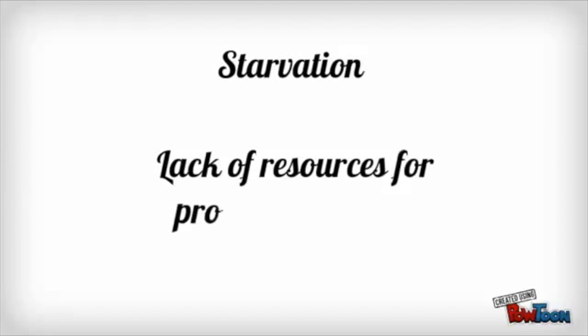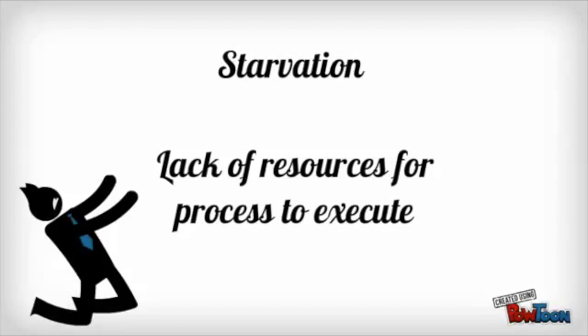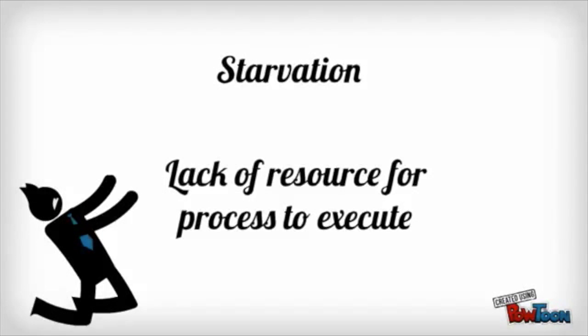Starvation. What is starvation? In computer science, starvation is a problem encountered in multitasking where a process is denied necessary resources on purpose. Without these resources, the program can never finish its task. Starvation is usually caused by an over-simplistic scheduling algorithm. For example, if a multitasking system always switches between the first two tasks, while a third task never gets to run, then the third task is being starved off CPU time.